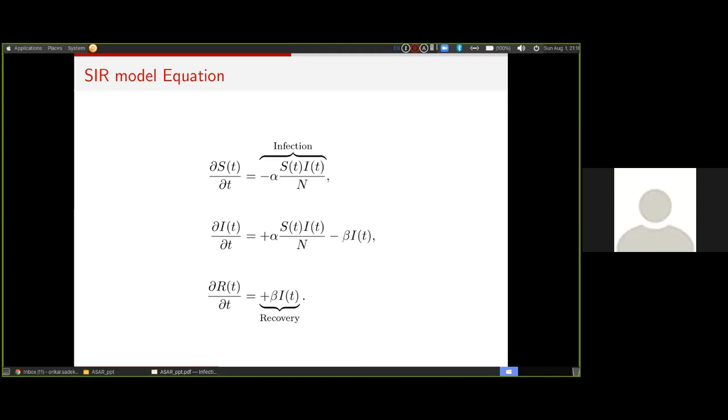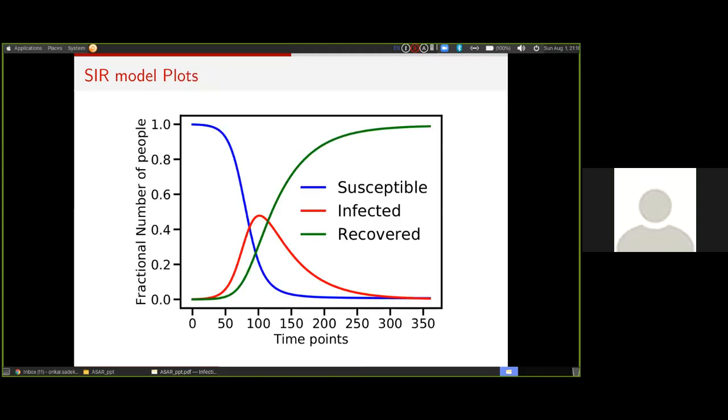You don't need to worry about what the terms exactly mean or how they are coming into the picture. You just need to know that the left-hand side denotes the rate of change of susceptible, infected, or recovered people, and the right-hand side denotes how they change with time. One thing to note here is that this model assumes that everyone is equally likely to interact with everyone else. If you consider a population of, let's say, 500 people, this model assumes that all these 500 people can interact with everyone else.